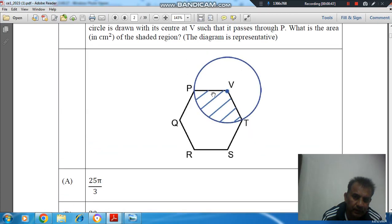So this is the diagram and this is your hexagon, and this angle is 120 degrees because in a hexagon the angle is 120.